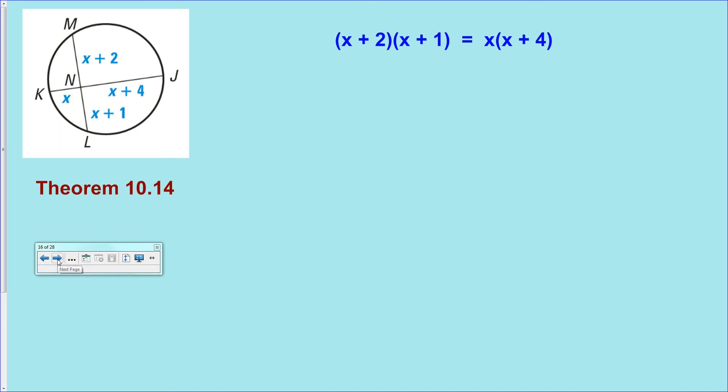That'll look like that. Distribute and FOIL on each side. That'll get you an x squared term on each side. Thankfully, it's exactly one x squared on each side, so they cancel out. How awesome is that? And it gets to be a linear equation that basically solves itself for you. x equals 2.